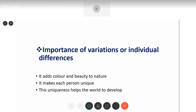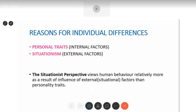This is the reason why variations or individual differences are so important. Let's move to the next slide — reasons for individual differences. Where and how do we get these different individual differences? The first is personal traits, that is internal factors. Certain psychologists believe it is your genes and personality that you are born with which makes you different. Other psychologists believe it is the external factor — situationism — the situation in which a person is placed which makes him behave in a particular manner.